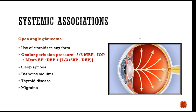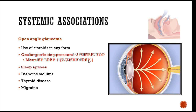The concept of ocular perfusion pressure is given by the formula: 2/3 mean blood pressure minus IOP. The lower the blood pressure or higher the IOP, the ocular perfusion pressure drops, causing ischemic damage to the optic nerve head — this forms the concept of normal tension glaucoma. Nocturnal hypotension causes the mean blood pressure to drop at night, reducing ocular perfusion pressure and causing glaucomatous damage even with normal IOP. Sleep apnea also contributes through respiratory obstruction leading to hypoxia.